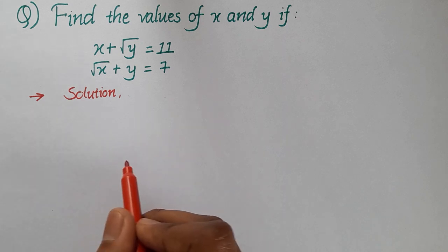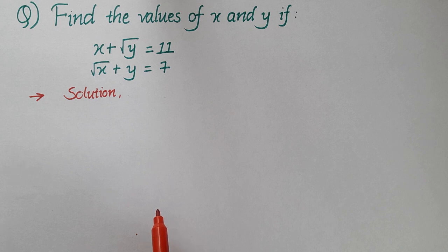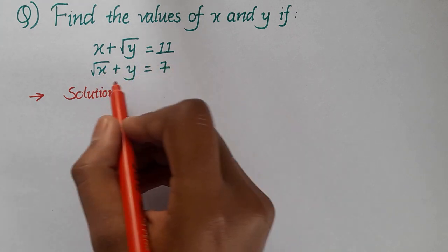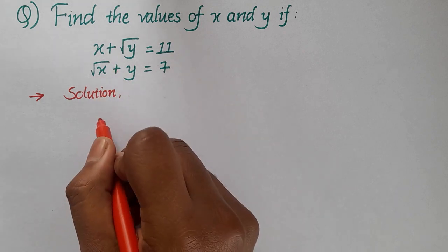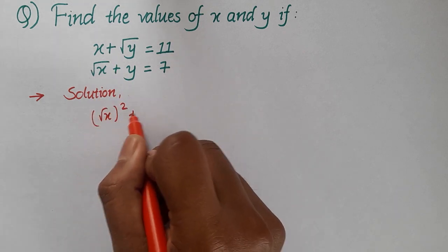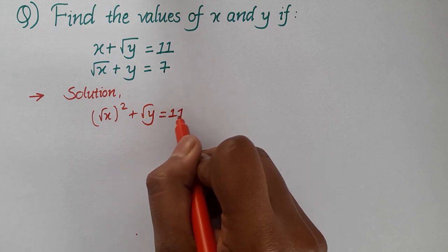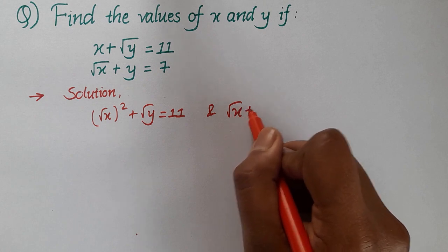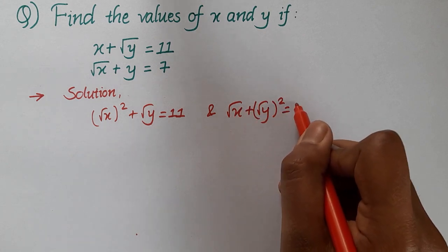How do we solve for the values of x and y which satisfy these equations? We have x plus root y is equal to 11 and root x plus y is equal to 7. The first equation can be written as root x squared plus root y is equal to 11, and the second equation can be written as root x plus root y squared is equal to 7.